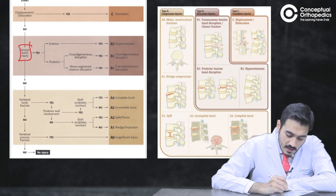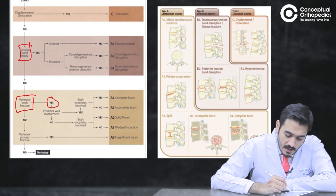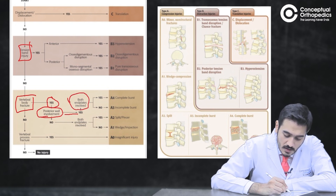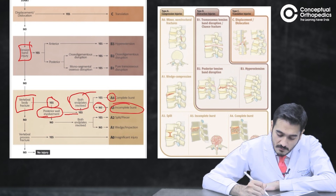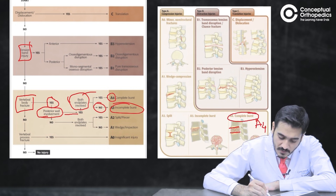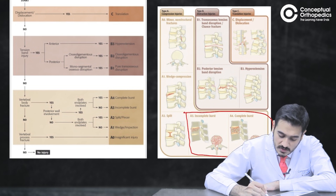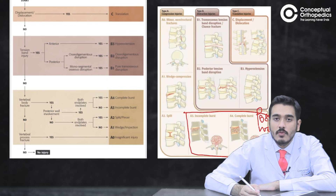If there is no tension band injury, look out for a vertebral body fracture. If there is a vertebral body fracture and the posterior wall is involved, check whether both end plates are involved — if yes, it is an A4 fracture (complete burst). If both end plates are not involved, it is A3 (burst). So A3 and A4 are the ones with posterior wall involvement.